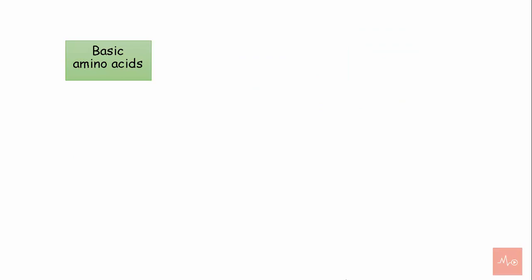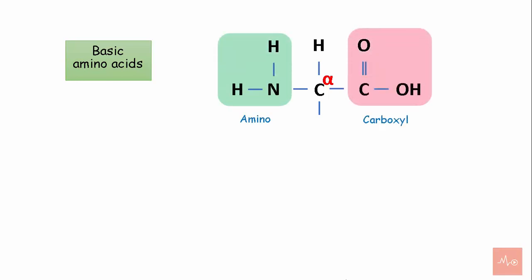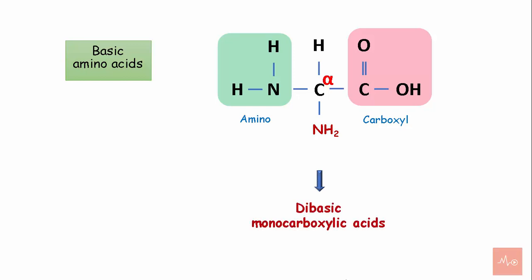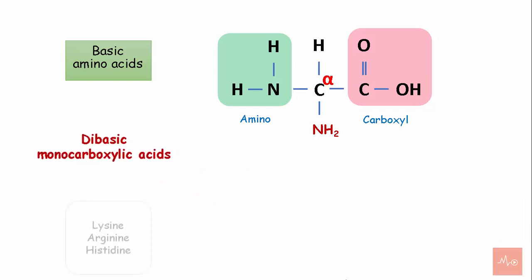Basic amino acids contain a carbon skeleton, two amino groups, and one carboxyl group, so they are called dibasic monocarboxylic acids. The side chain contains an additional amino group, which makes them basic. Examples of these amino acids are lysine, arginine, and histidine.